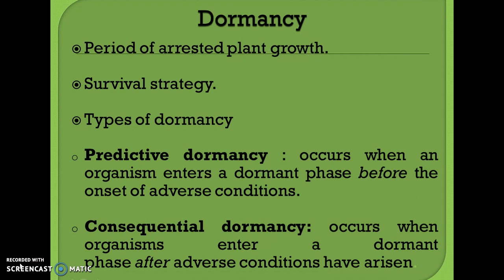In plant physiology, dormancy is a period of arrested plant growth in the developmental cycle of a plant. At some phase it may temporarily stop its physical activity. This dormancy can be exhibited by any part of the plant, such as a bud, a tuber, or a seed. Dormancy is a survival strategy exhibited by many plant species.